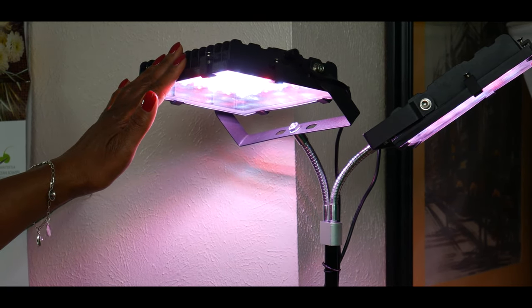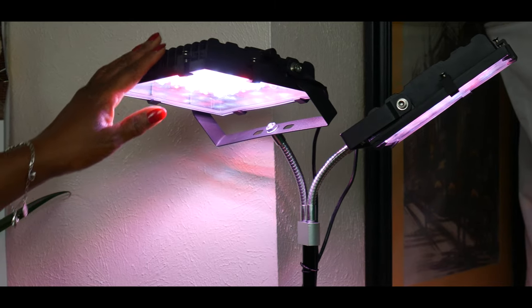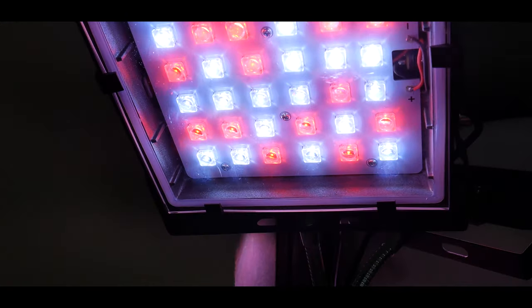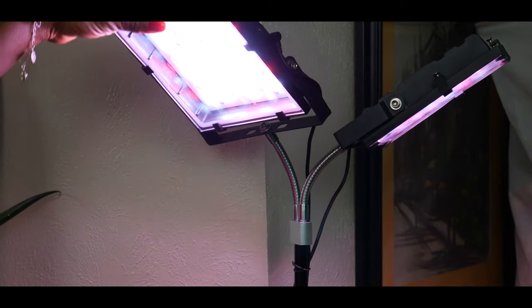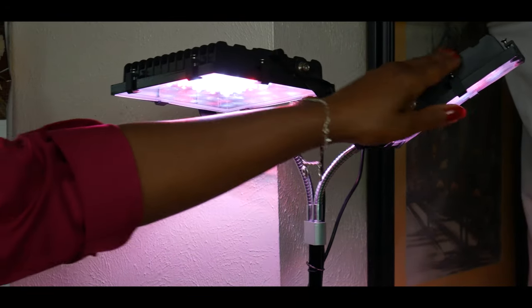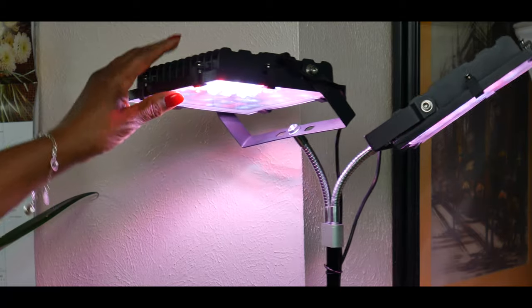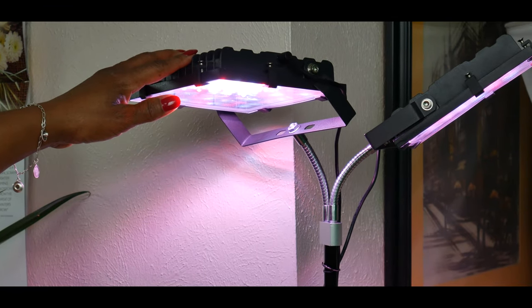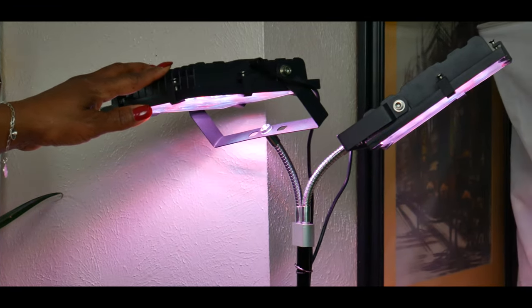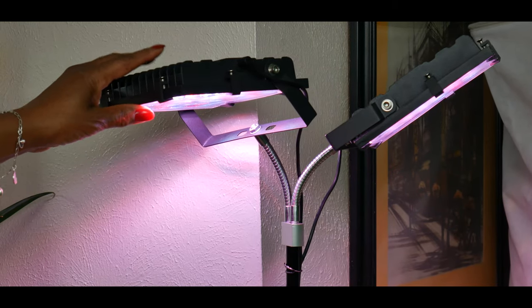The grow lamps have a 360-degree rotatable mount to allow for different angles. Each lamp has an individual on and off switch to quickly turn your lights on and off.